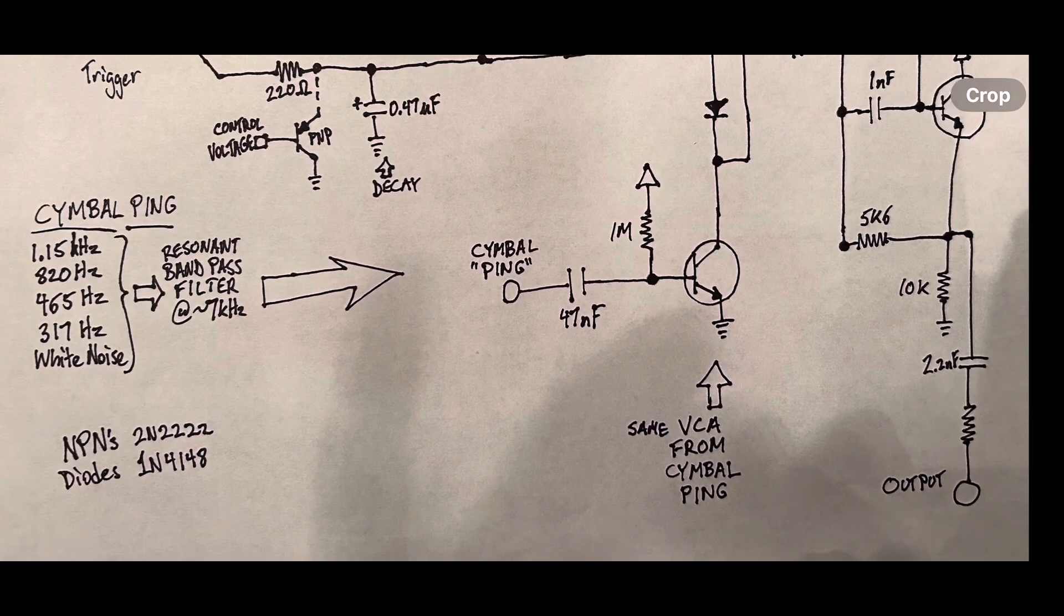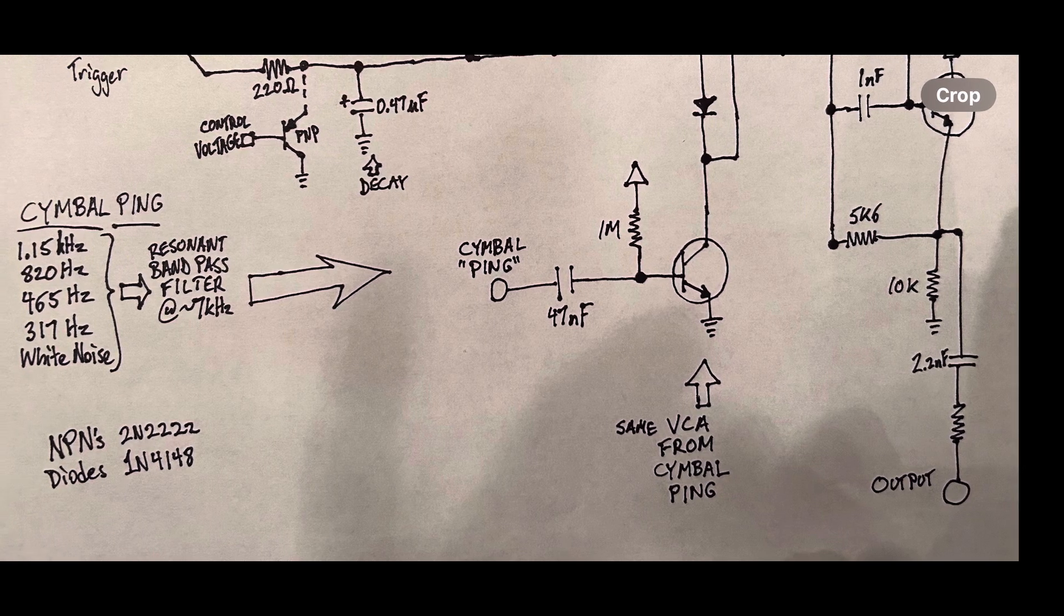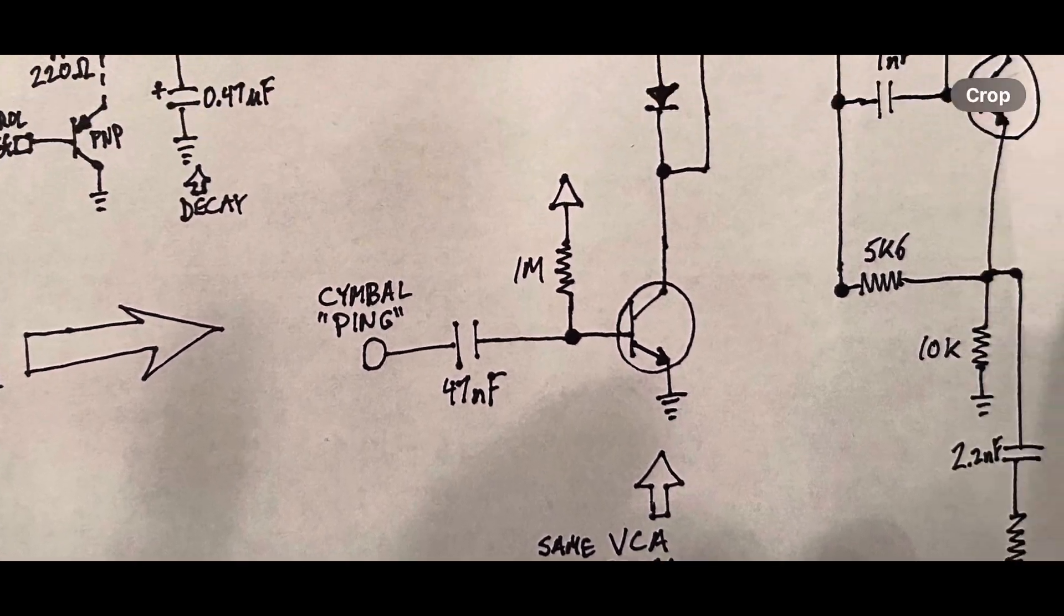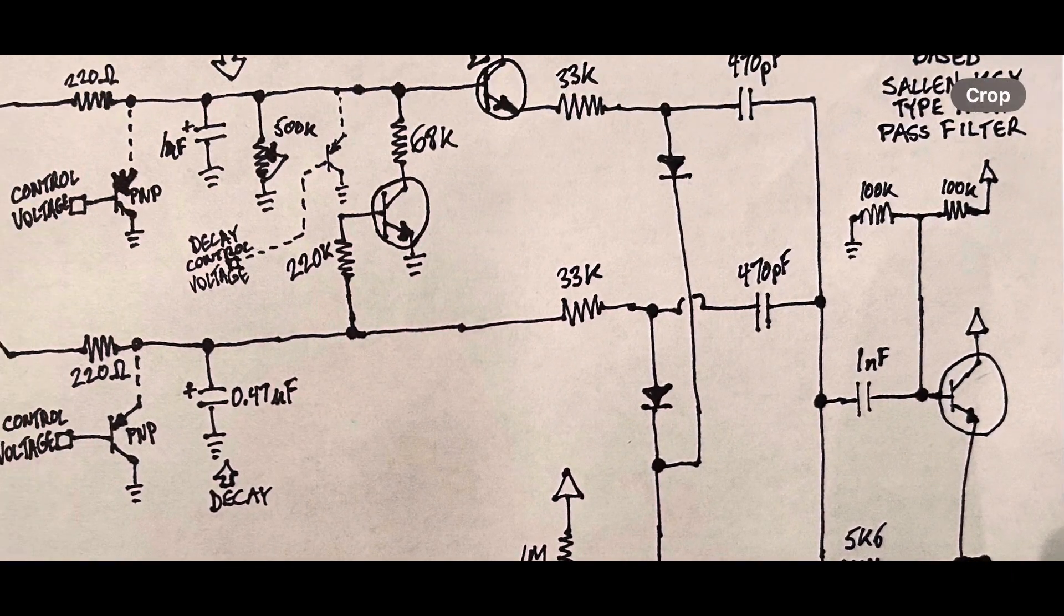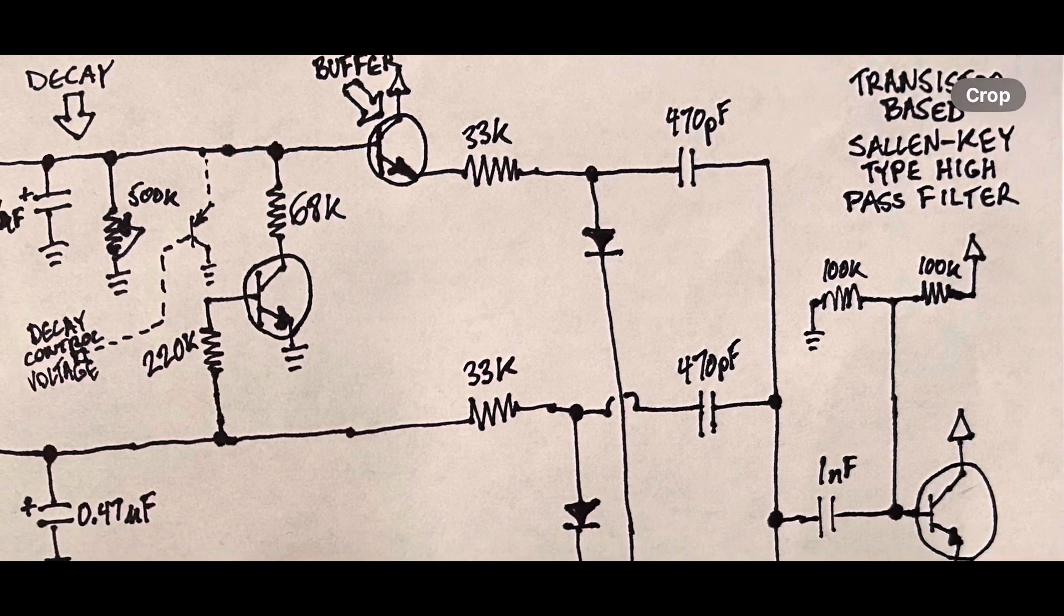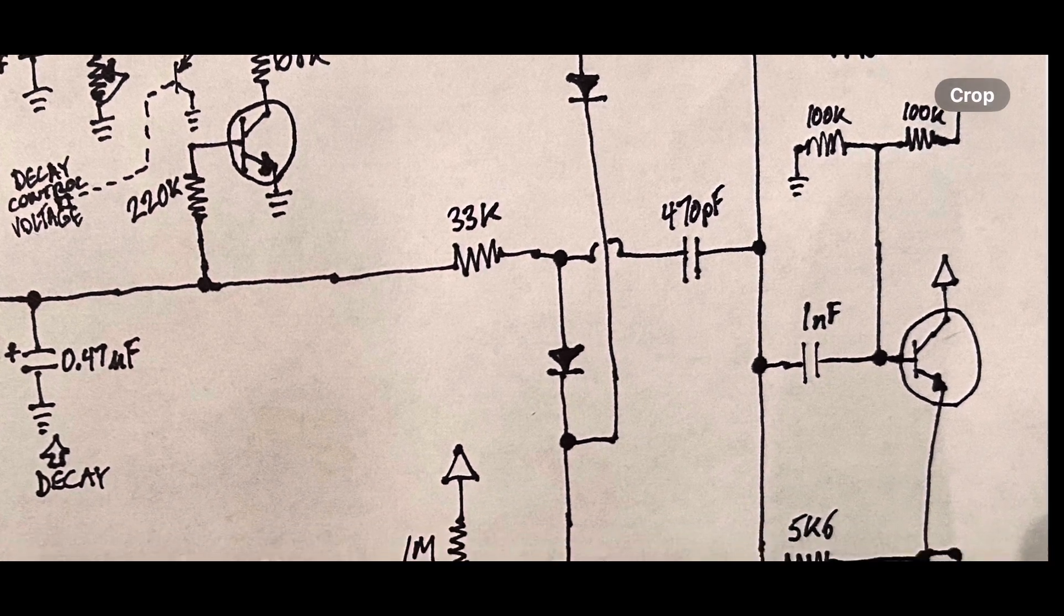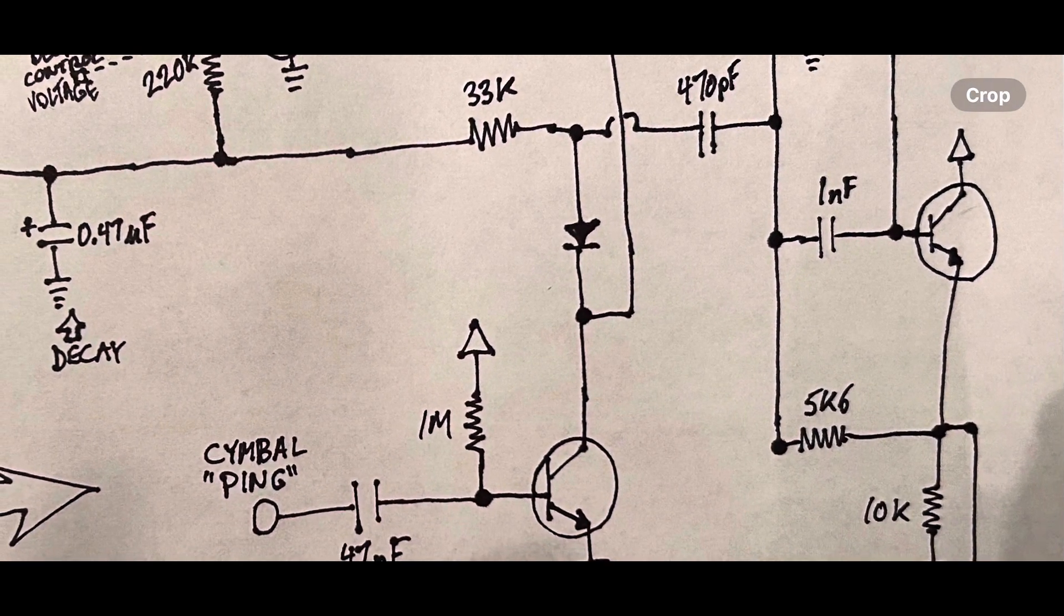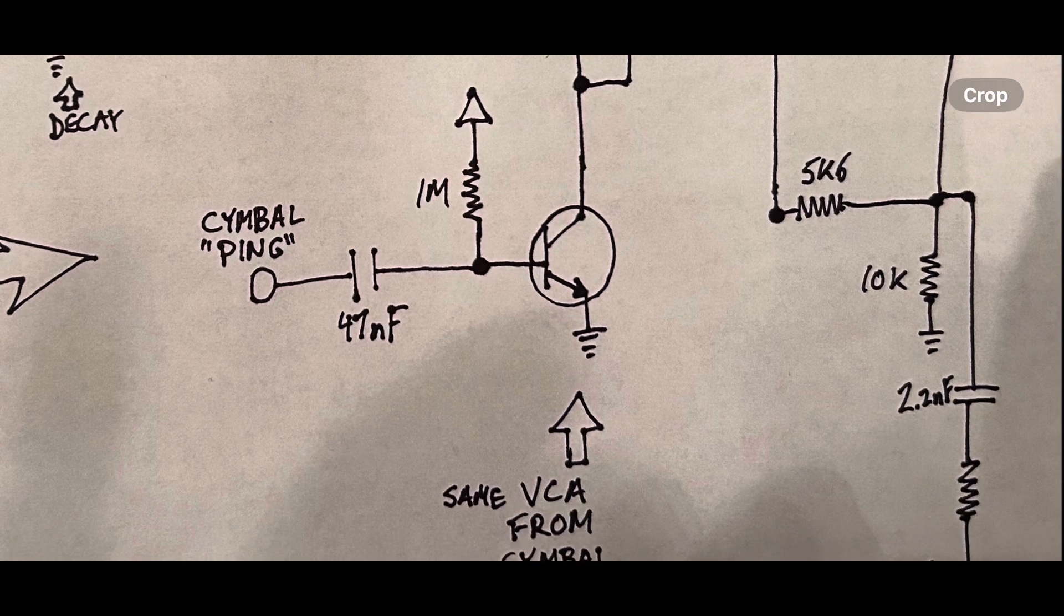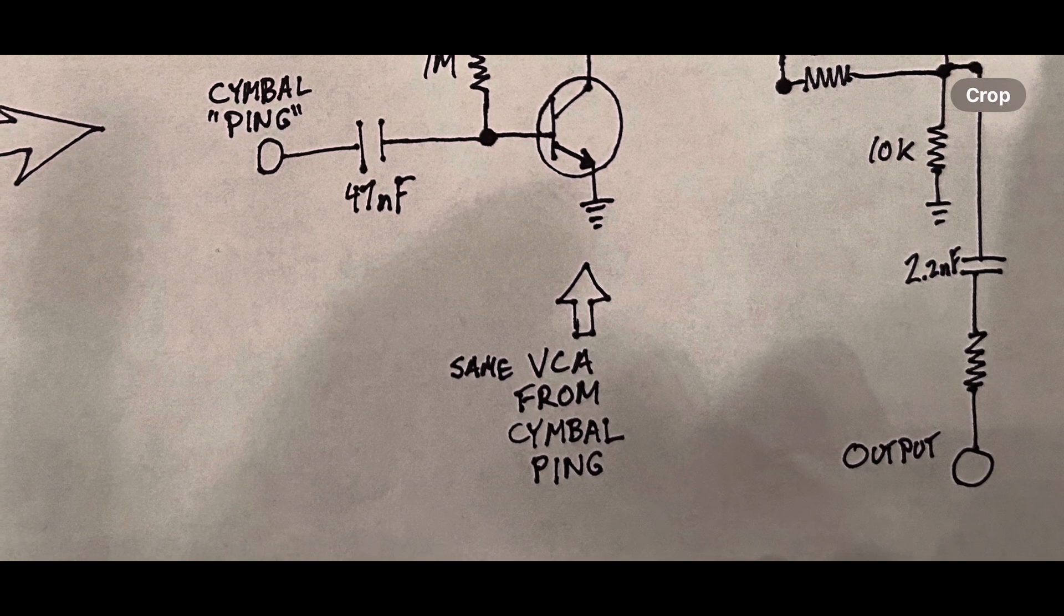The output from the VCA goes into this transistor-based Salen key-type high-pass filter, which filters the signal before it gets output. So this is already present within the cymbal circuit. And the resistor at the tail end of that is a 5.6k resistor.